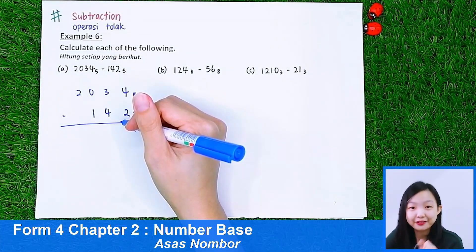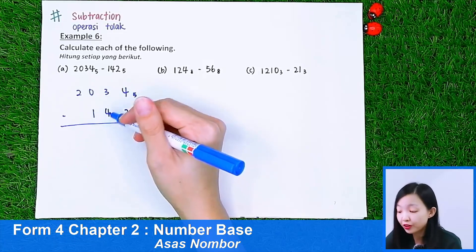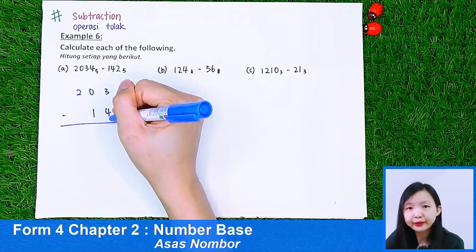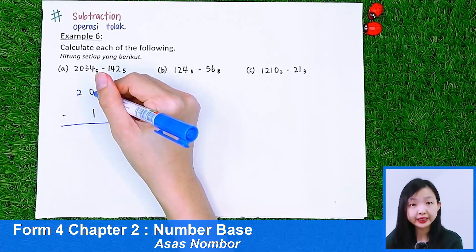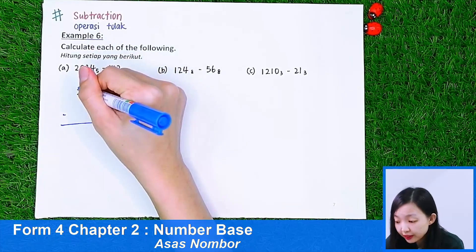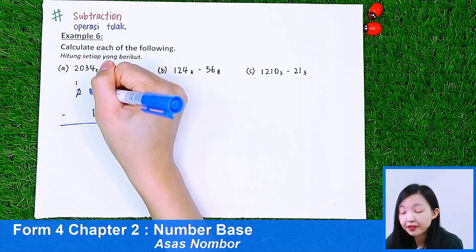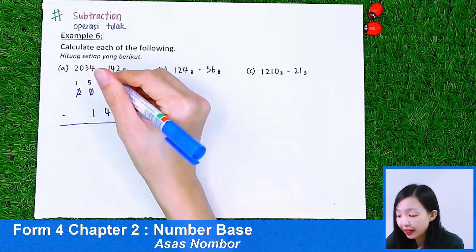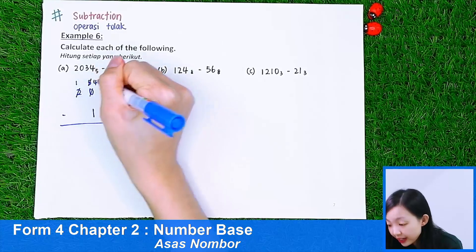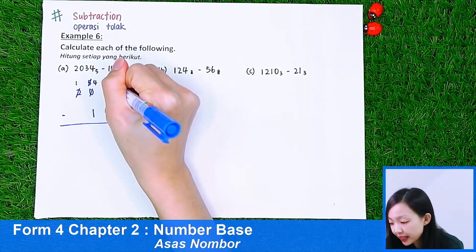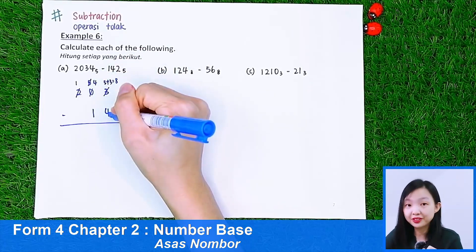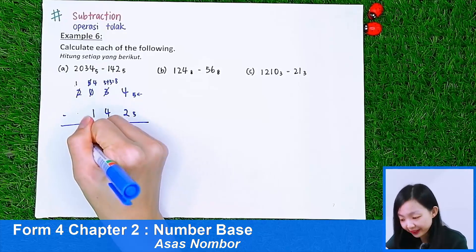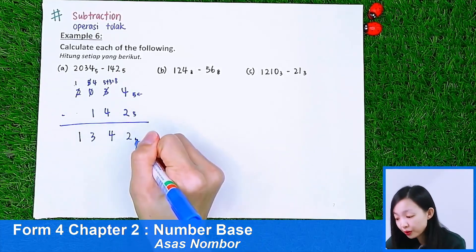Now we go to subtraction. Part A: 2, 0, 3, 4 minus 1, 4, 2 in number base 5. 4 minus 2 is 2. Then 3 minus 4 — we cannot. The next digit is 0, so we cannot borrow from there either. So we borrow from the 2, which becomes 1. The 0 becomes 5 — because the number base is 5. Then we borrow 5 to the 3, making it 8. 8 minus 4 is 4. Then 1 minus 1 is 0 — wait, 4 minus 1 is 3. And 1 minus 0 is 1. So the final answer is 1, 3, 4, 2 in base 5.